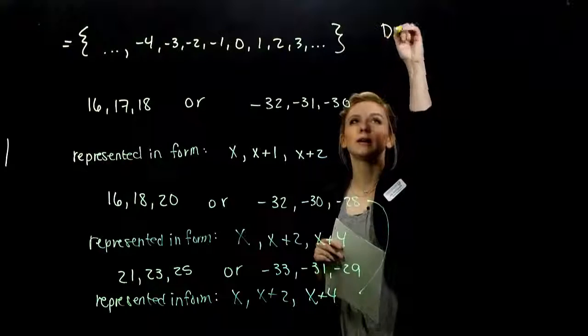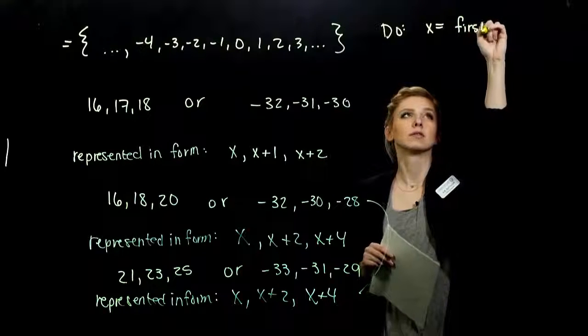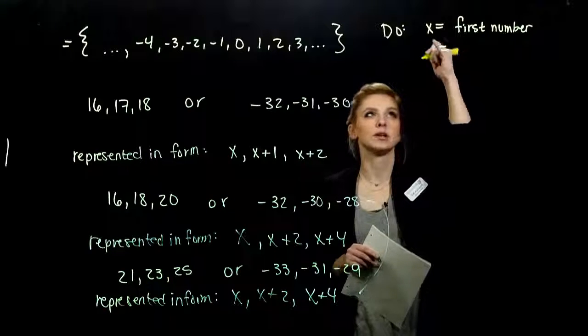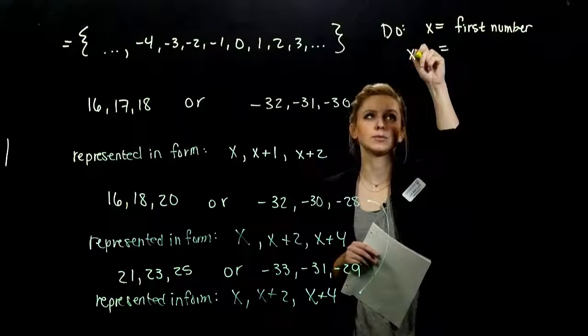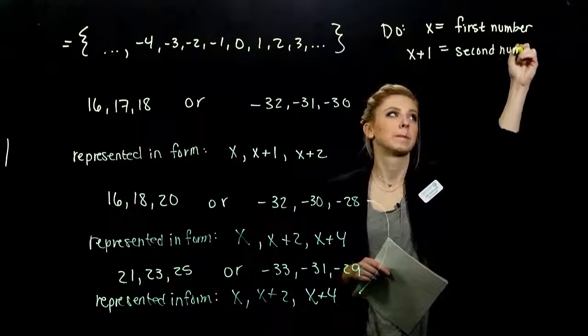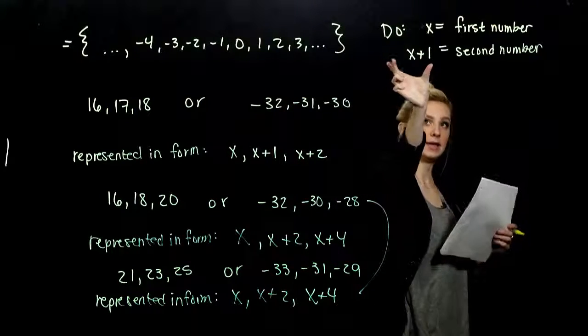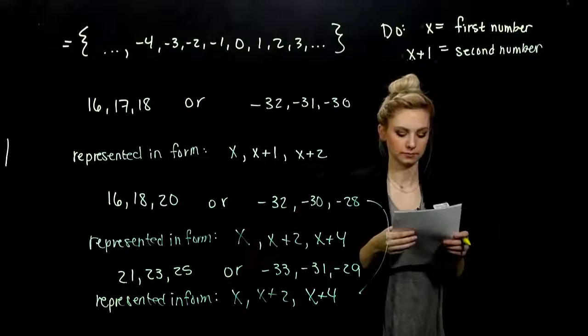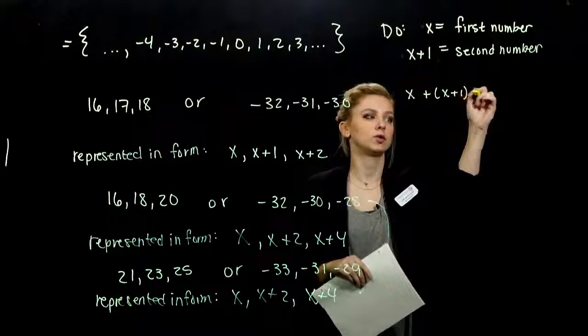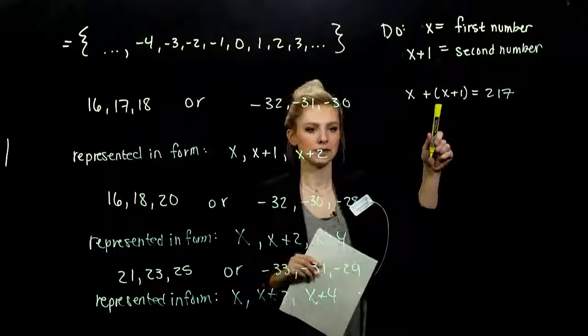So if I let x be the first number, the first limited edition print. First number. The second number is going to be represented by what expression? In terms of x. Next to it, one higher. That is the second number. And I know if I'm adding the first number and the second number together, it equals 217. So if I add x and x plus 1, those two numbers together give me 217.